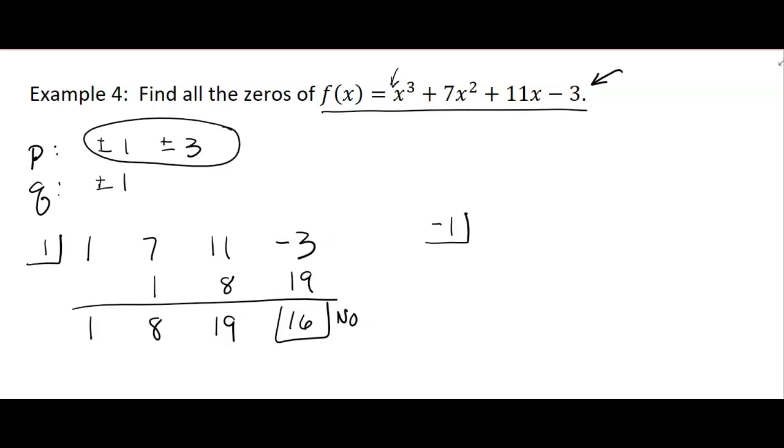Let's try negative 1 and see if we have any better luck. 1, 7, 11, negative 3. Bring down the 1. 1 times negative 1. 6. 6 times negative 1 is negative 6. 5. Oh, no good feeling about this either. Well, that didn't work either, so no.